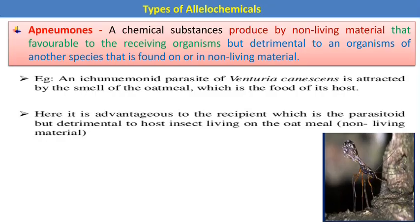Apneumones are chemical substances produced by non-living material that are favorable to the receiving organism but detrimental to the organism of another species found on the non-living material. The best example is a species of wasp that is attracted by the smell of oatmeal, which is the food of its host.